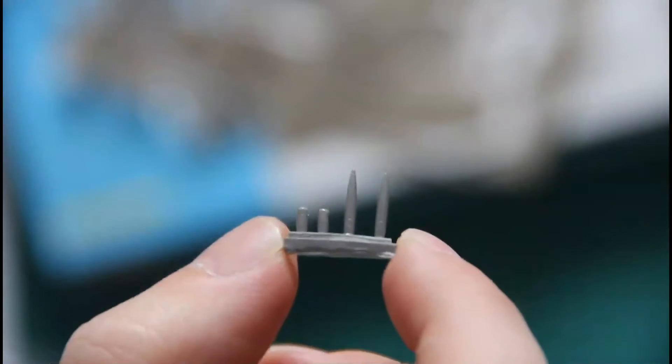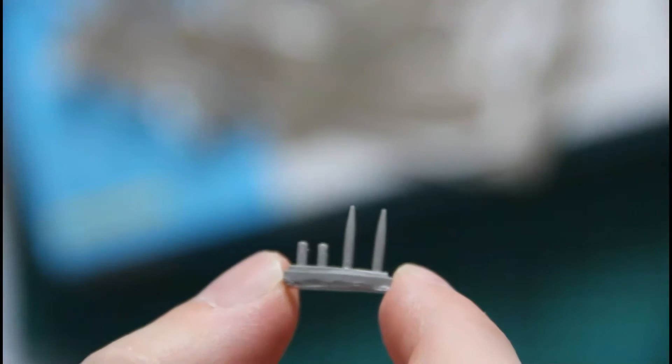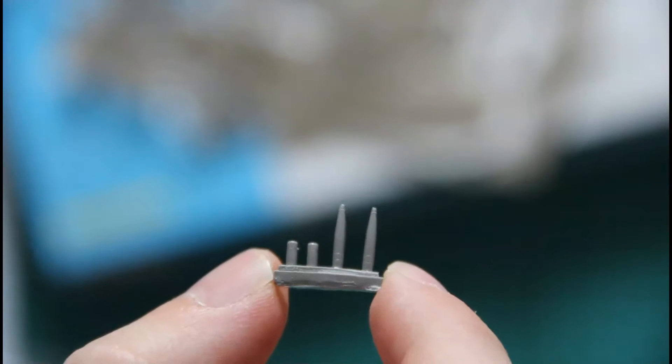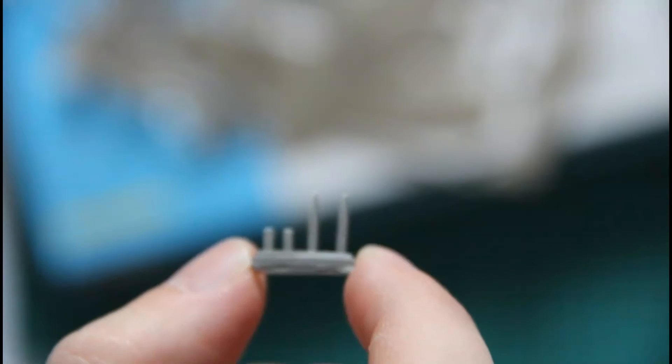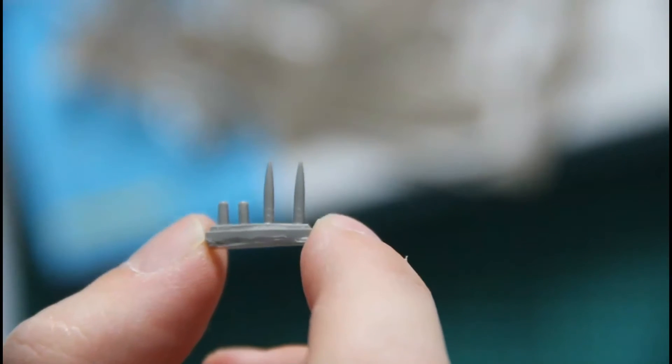Then we have four resin parts, which will be used to imitate gun barrels. Here you can see it properly. Even though there are plastic parts supplied, the manufacturer decided to include these barrels as well. Of course, they are a bit better, but the plastic parts are also not that bad.